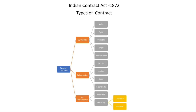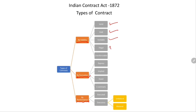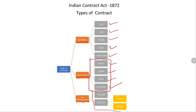Moving to the next topic: types of contract. Types of contract can be classified by validity, by formation, and by performance. Under validity: valid contract, void contract, voidable contract, illegal contract, and unenforceable contract. Under formation: express contract, implied contract, quasi-contract, and e-contracts. By performance: executed contract, executory contract, unilateral contract, and bilateral contract.